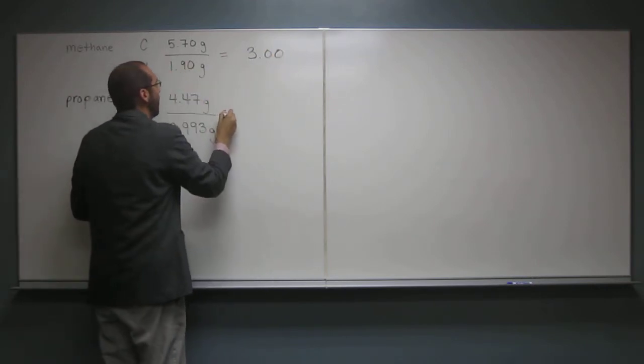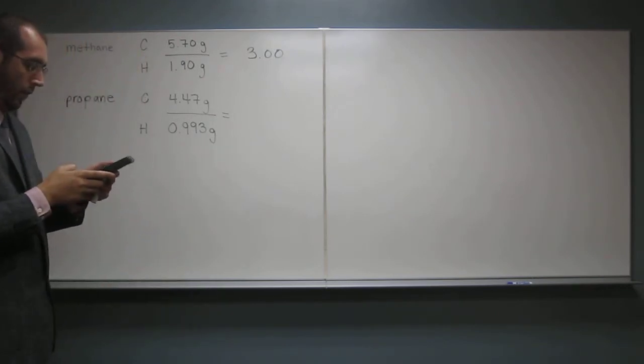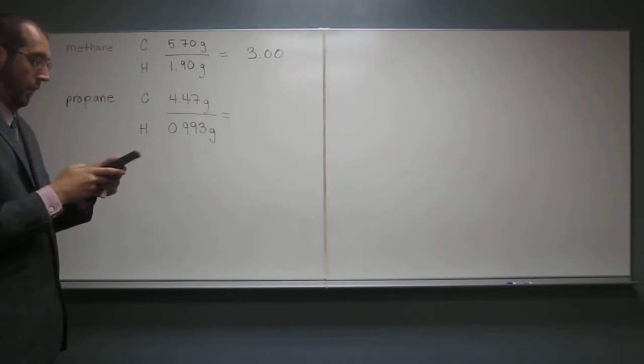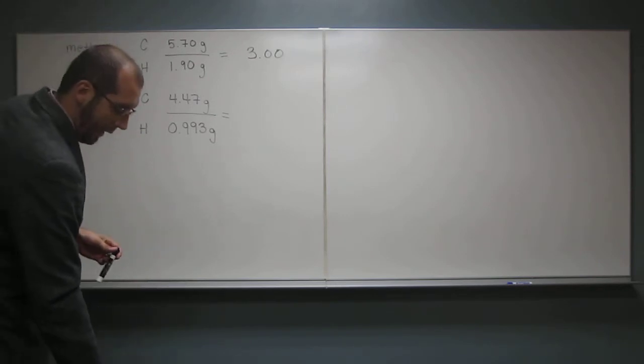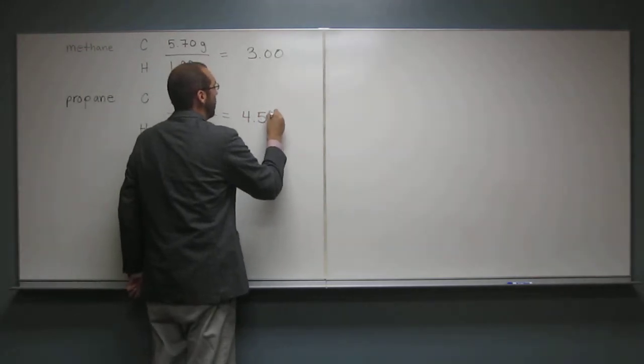And then here, let's do the same thing. So 4.47 divided by .993, and in that case, I get 4.50.